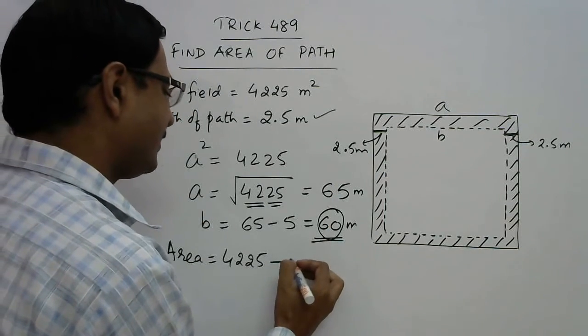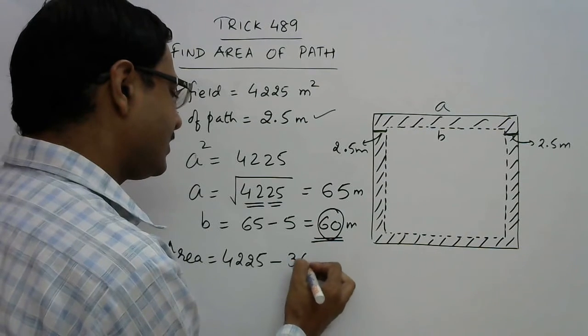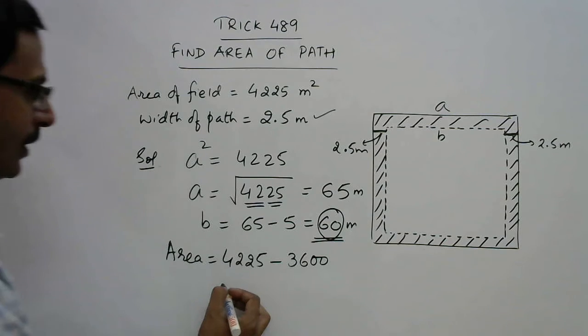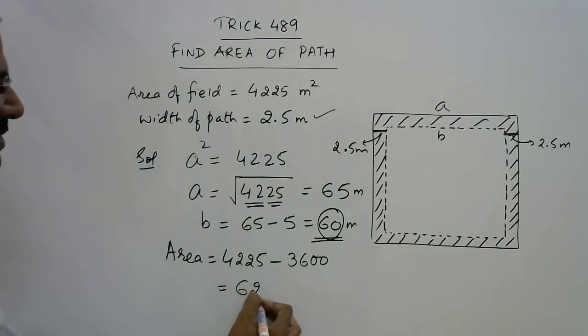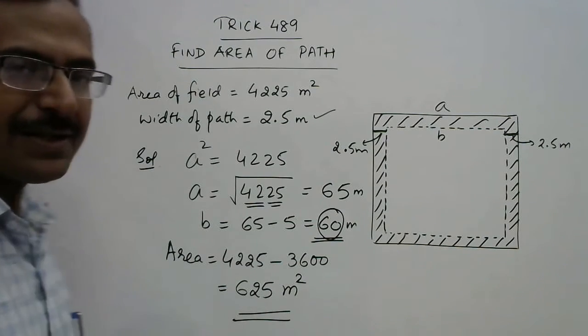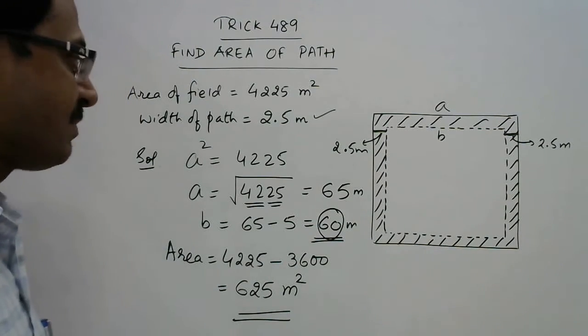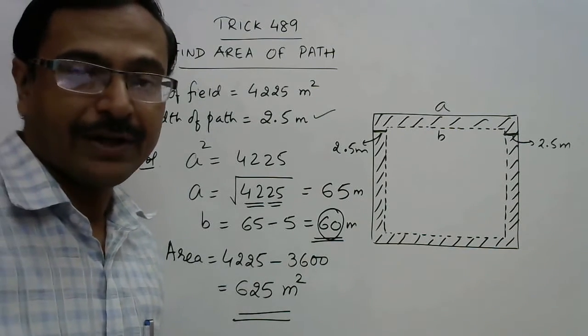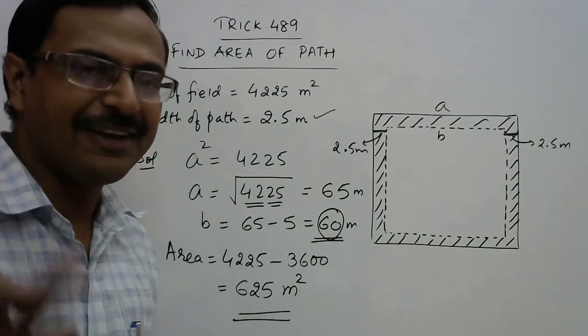And here we have the answer for the question: 625 square meters. Isn't that amazing? A small shortcut of finding the square roots and you are able to find the area of the path very very easily.